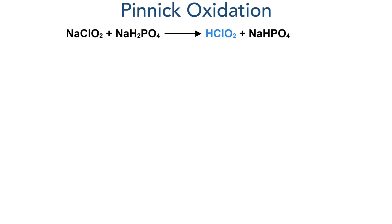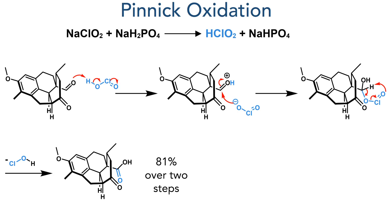In the next step the aldehyde was oxidized using a Pinnick oxidation. Chlorous acid is first generated by the reaction of sodium chlorite and sodium dihydrogen phosphate. This chlorous acid first protonates the aldehyde, allowing chlorate to attack as a nucleophile. An intramolecular hydrogen abstraction then occurs, eliminating hypochlorous acid while forming the target carboxylic acid with an 85% yield over two steps. The hypochlorous acid that is generated is scavenged in situ by reaction with 2-methylbutene.